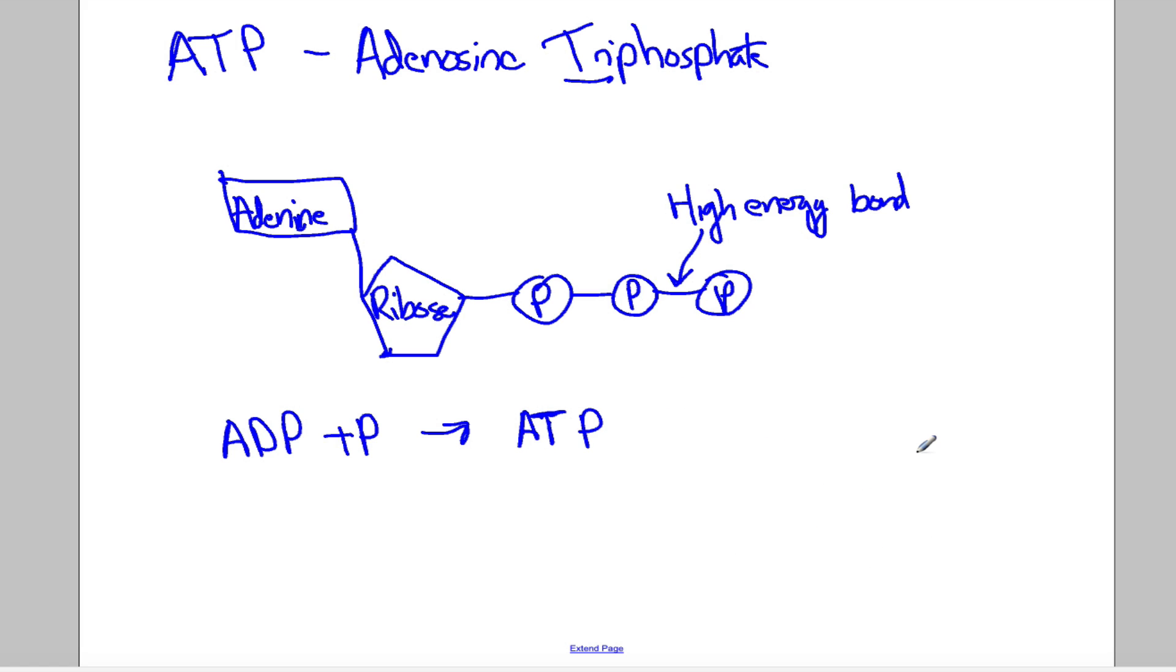If you need that energy now to move something into the cell through active transport, you're going to release that phosphate, break this bond, and that energy is going to be available. If you're taking smaller molecules to make bigger molecules and you need energy to do that, you're going to break up ATP to ADP, and that energy is going to be available for that reaction to happen.